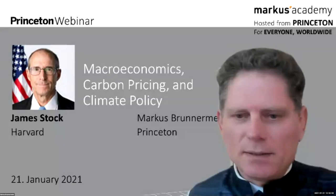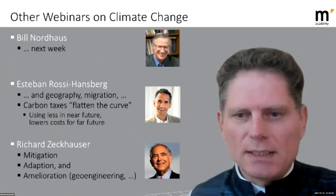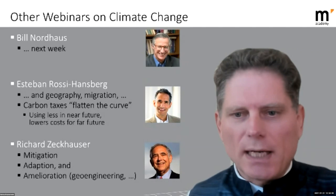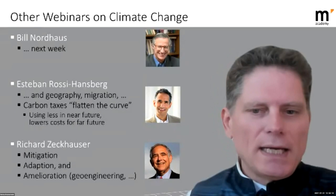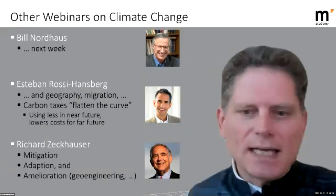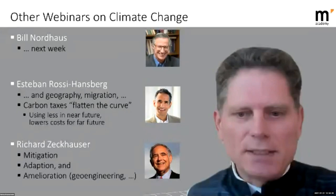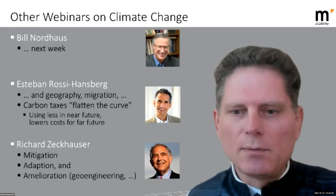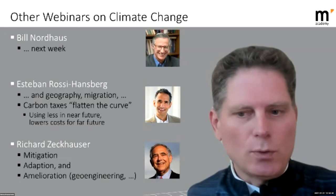He follows in the tradition of other webinars we've had here on climate change. Next week we'll have Bill Nordhaus who will also talk about climate change. Earlier we had Esteban Rossi-Hansberg who talked about climate change, geography, and migration, and introduced the concept of carbon taxing as flattening the curve — you use less energy in the near future, but then energy will be cheaper down the road, so you use more later. It's a dynamic trade-off.